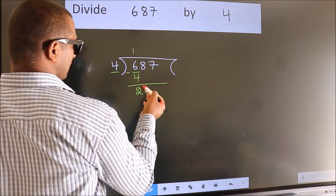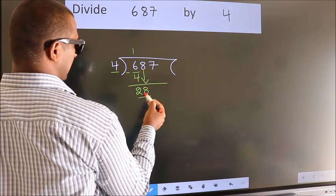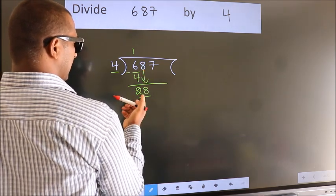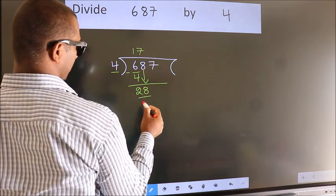After this, bring down the beside number. So, 8 down. So, 28. When do we get 28? In the 4 table, 4 7s, 28.